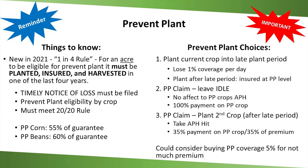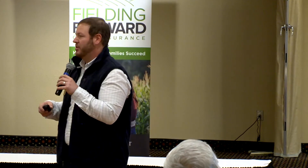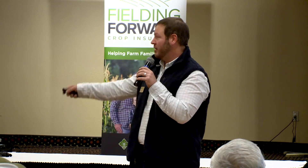A topic we don't like to talk about — hopefully you don't have to very often — is prevent plant. It came up a couple years ago. For 2022, new in 2021: for every eligible acre, it has to be planted, insured, and harvested in one of the last four years. So if you picked up new land for the upcoming year and it hasn't been insured, you can't prove it's been insured in one of the last four years — it does not qualify for prevent plant.